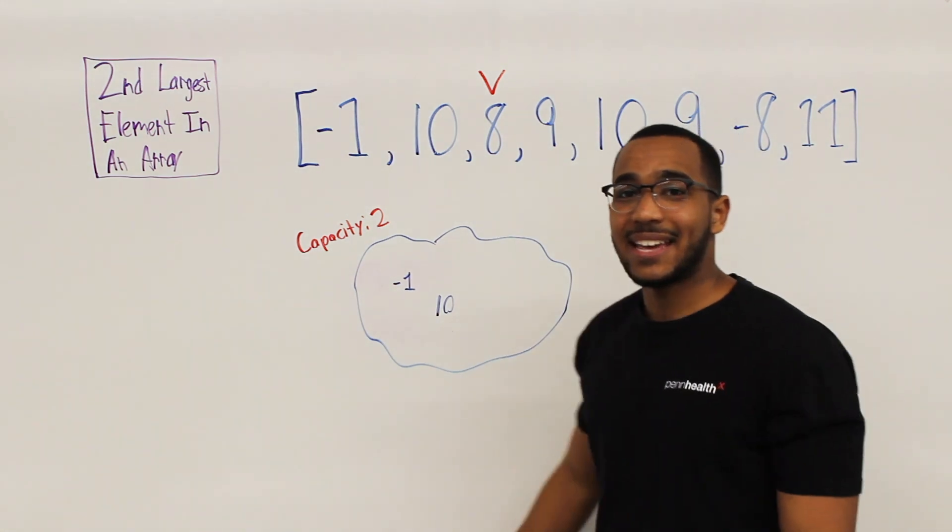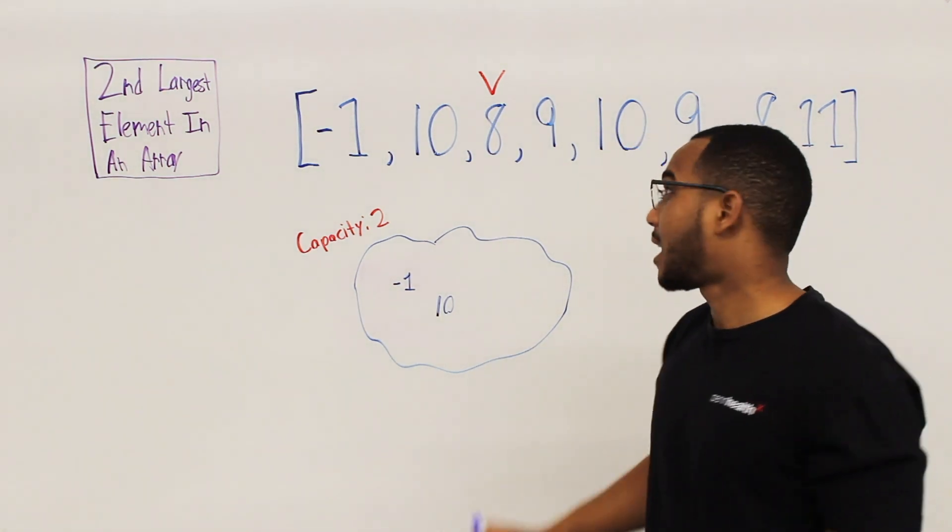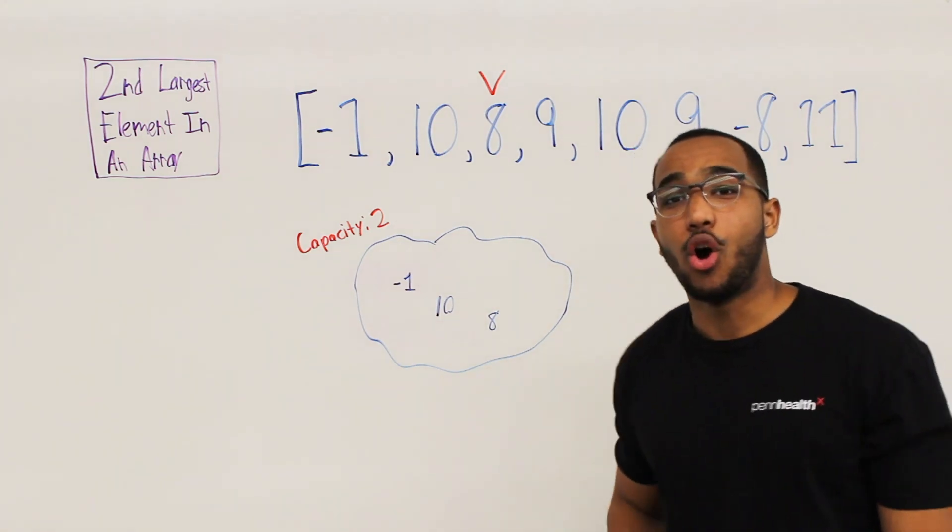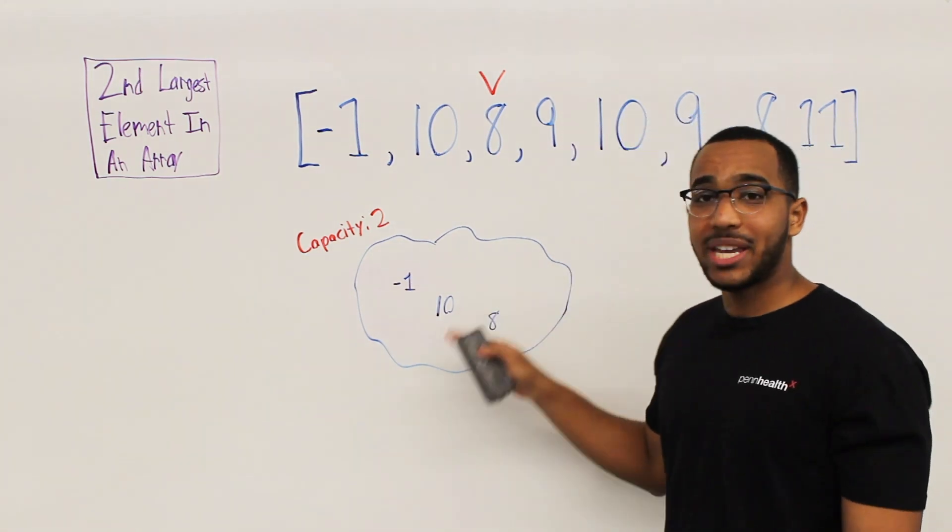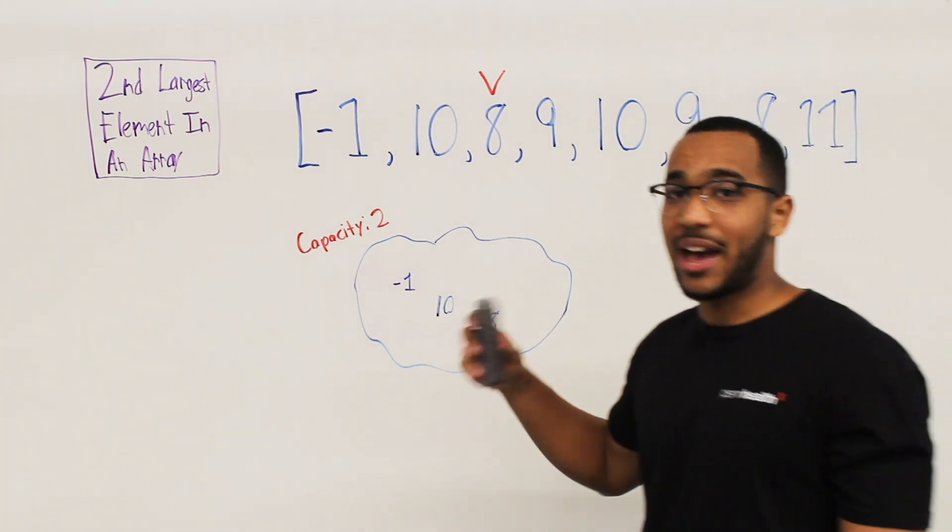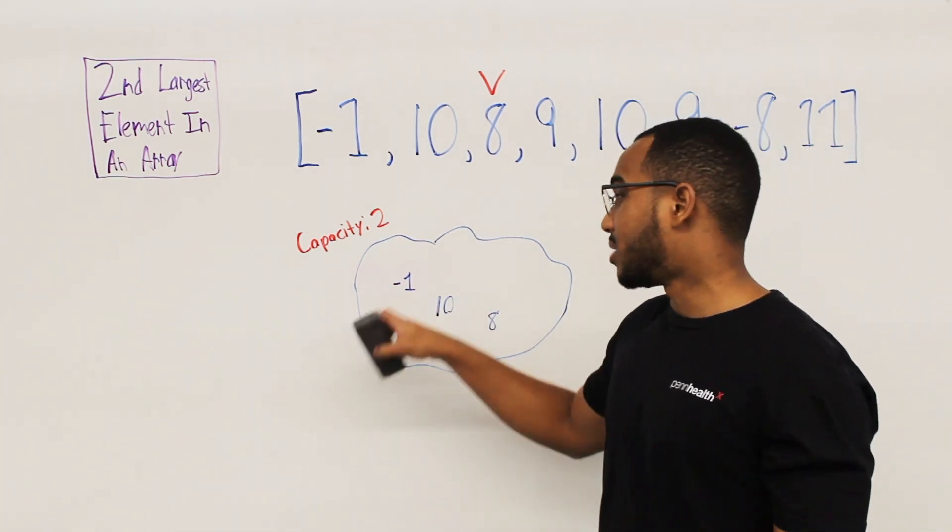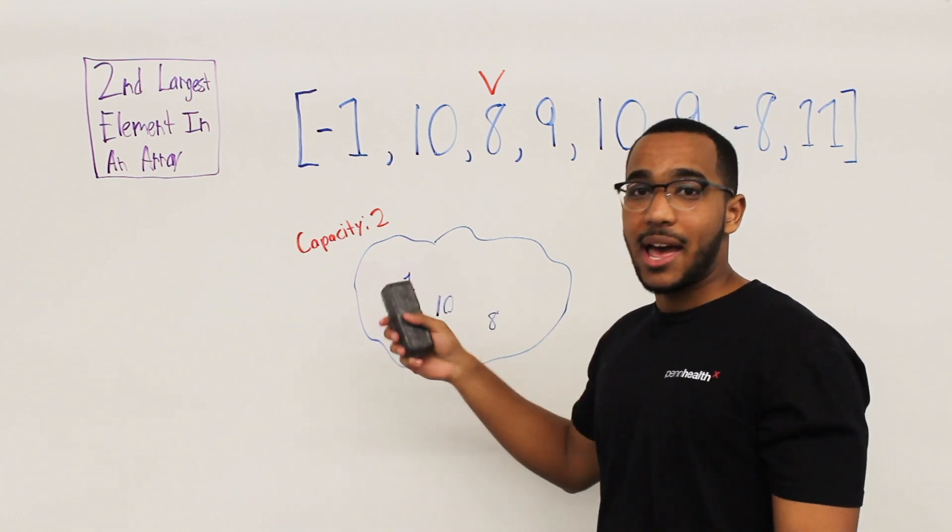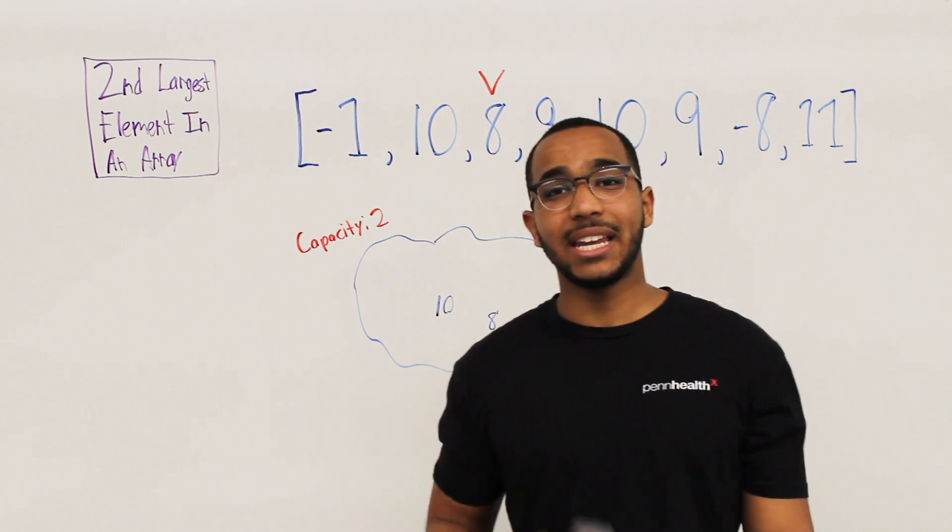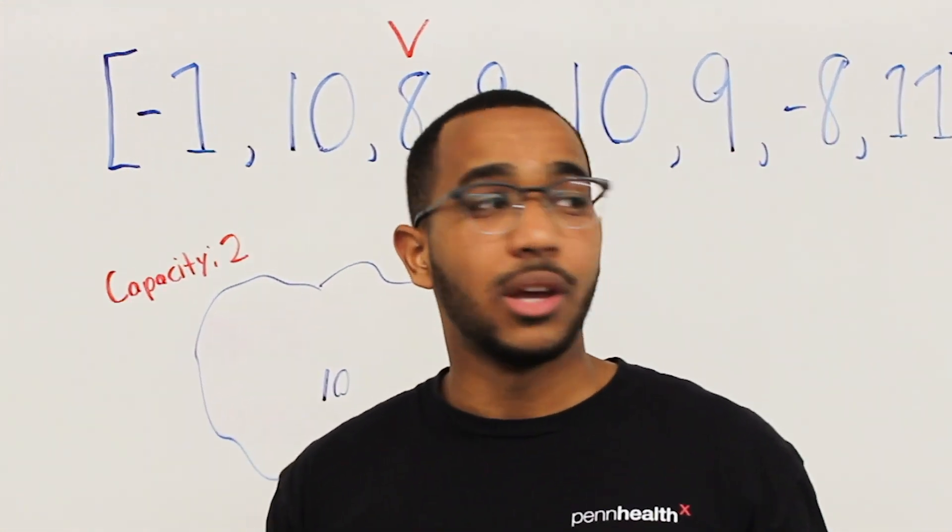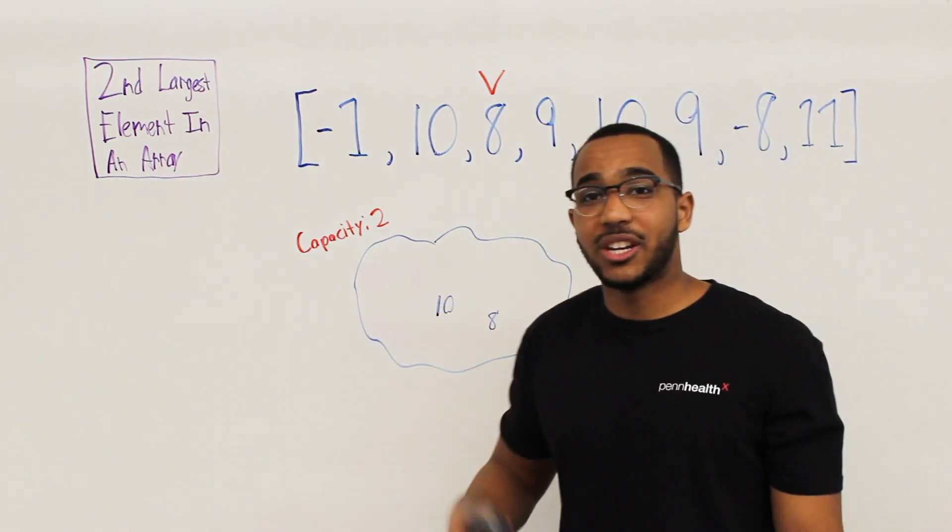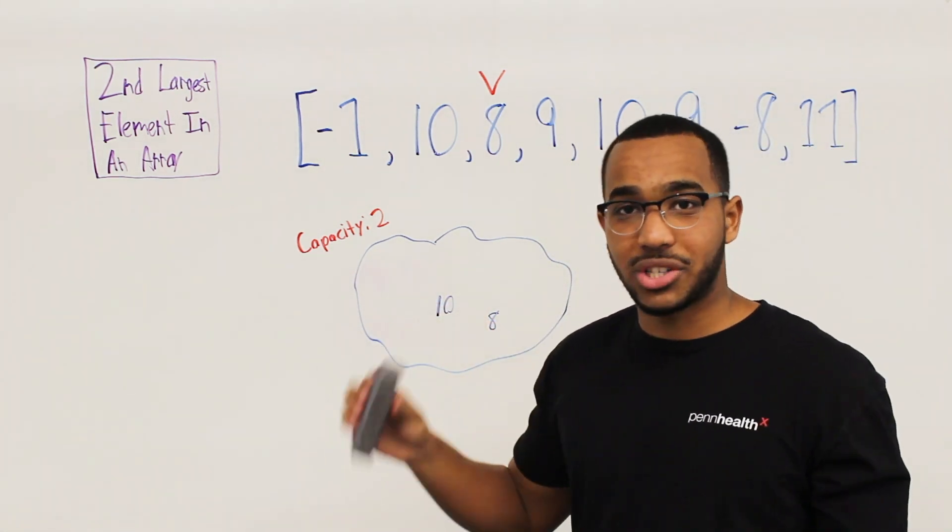So now we're at eight. Does eight exist in the heap? No, it does not. So we add eight to the heap, but we notice we have gone over capacity. So what we do is this is a min heap. So we are able to evict the smallest item. We have access to that item. So now we can just access the negative one and then we can just remove it. So you notice as we go through this, we are maintaining the two largest elements. When we go over capacity, we will remove the smallest item. When we finish the array, we're going to have the two largest elements.